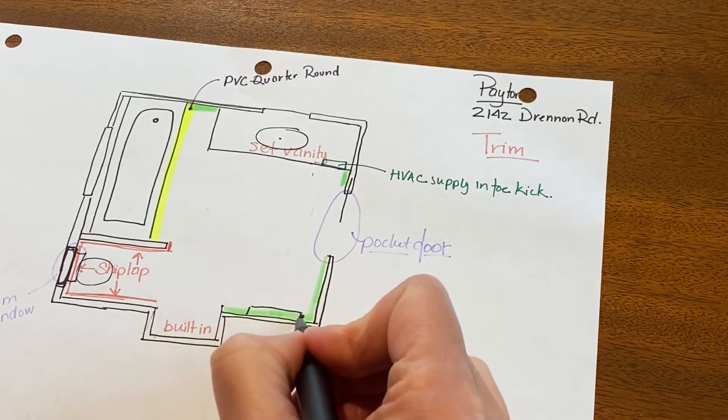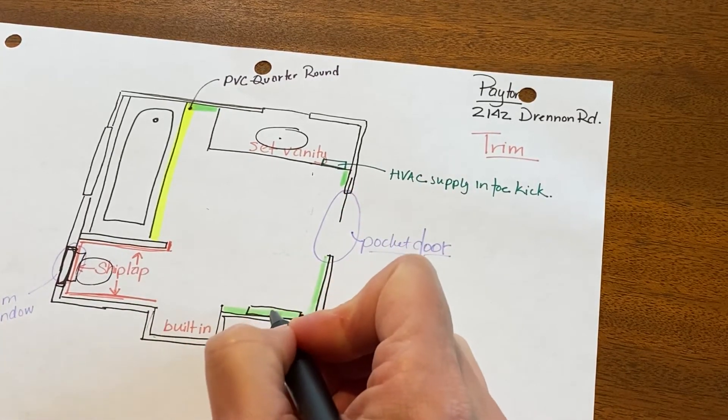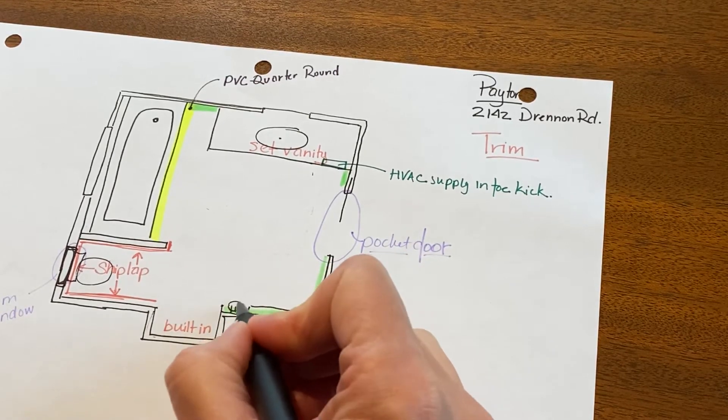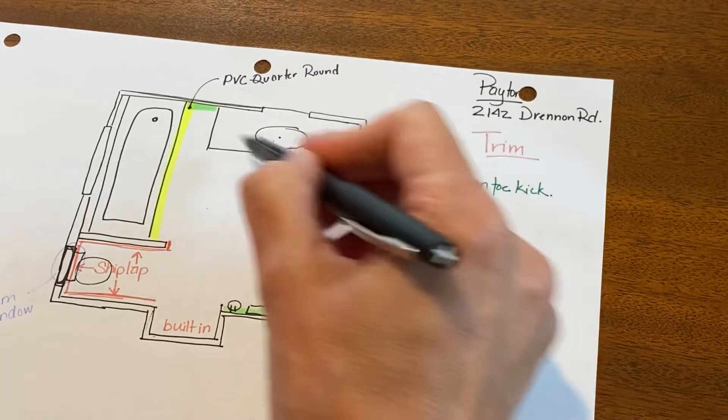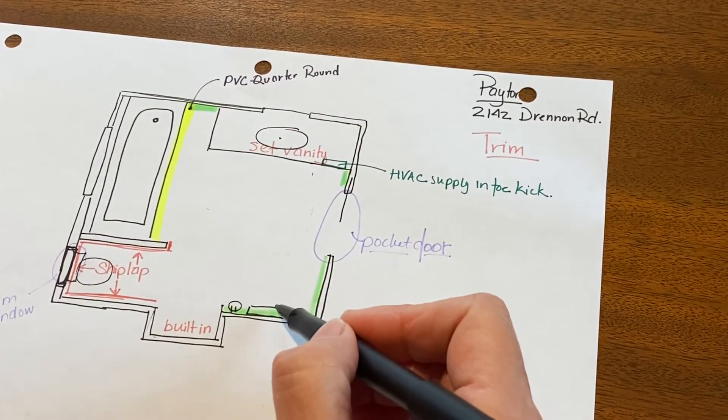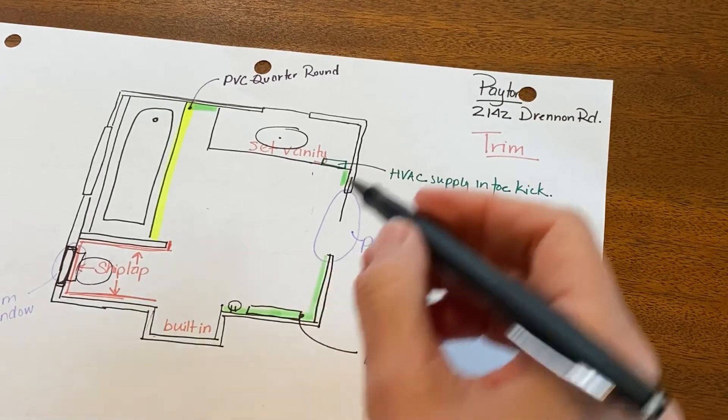We'll put an outlet right here beside it, and if Jared is busy shaving, doing whatever, getting ready in this spot, then right here I can be fixing my hair. So I thought that was a good idea.